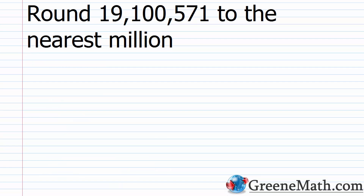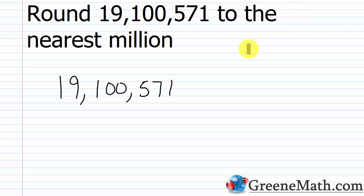For the last problem, we want to round 19,100,571 to the nearest million. So 19,100,571. Again, we're rounding to the nearest million — that 9 is in the millions place. We're looking at the digit immediately to the right, and that's a 1. The 1 falls again in the category of 4 or less, so we leave our digit in the roundoff place unchanged.